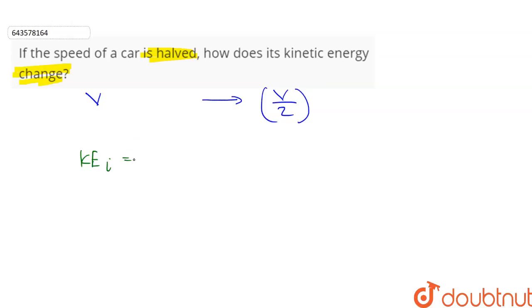So the initial kinetic energy KEi is equal to half into m into v square. And the final kinetic energy after halving the speed of the car becomes half into m into v by 2 square. This is equal to 1 by 4 into half m v square. Now this part is equal to KEi.